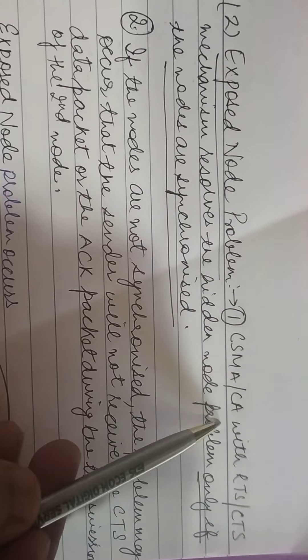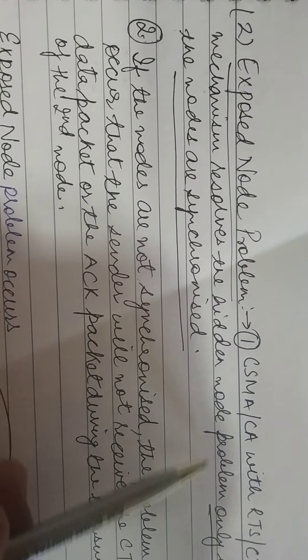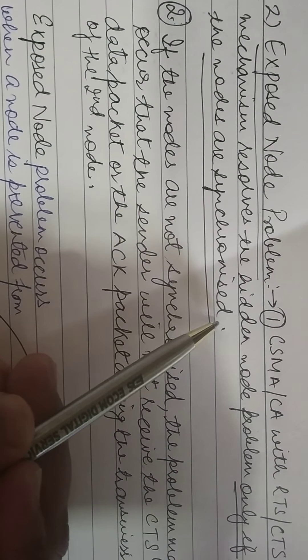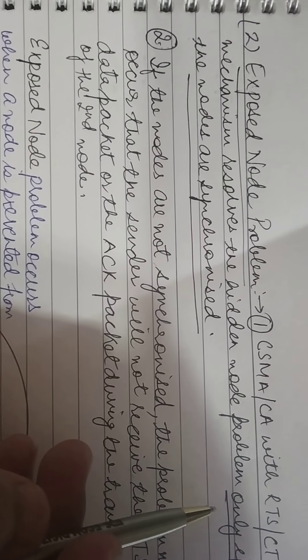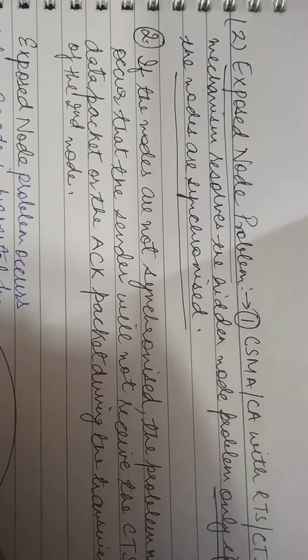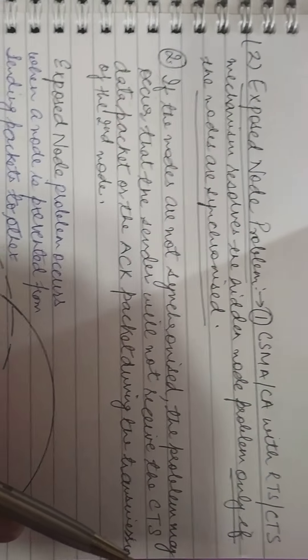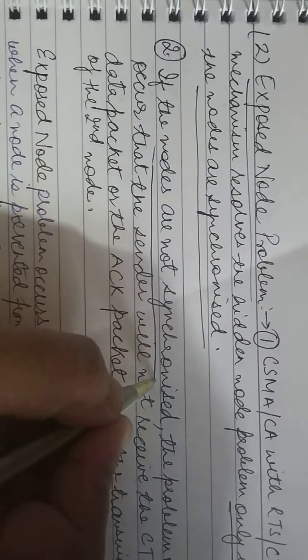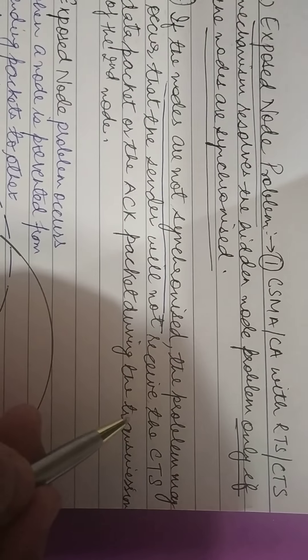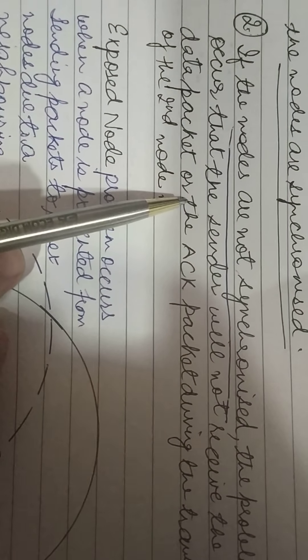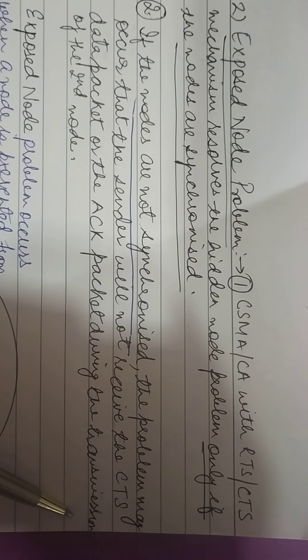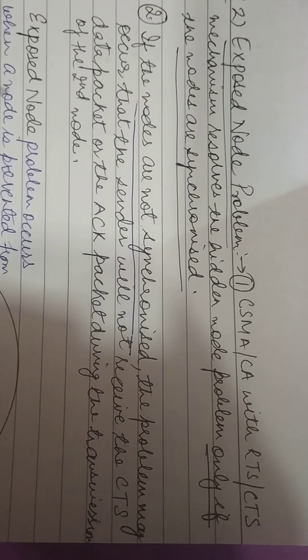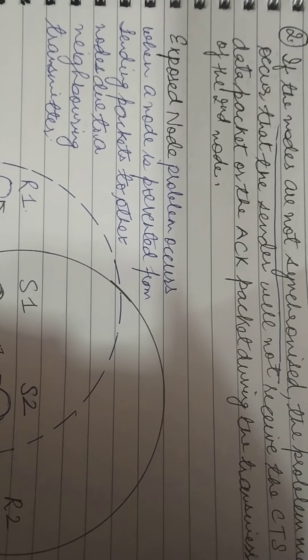CSMA/CA with RTS or CTS mechanism can resolve the hidden node problem, but only if the nodes are synchronized. When a node receives an RTS packet from a neighboring node but not the corresponding CTS packet, then the node can deduce that it is an exposed node and is permitted to transmit to other neighboring nodes. However, if the nodes are not synchronized, the problem may occur that the sender may not receive the CTS or acknowledgement packet during transmission of the second node.